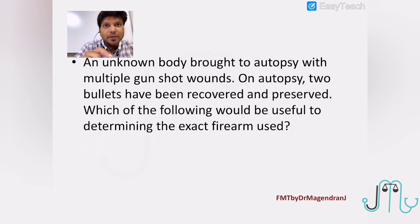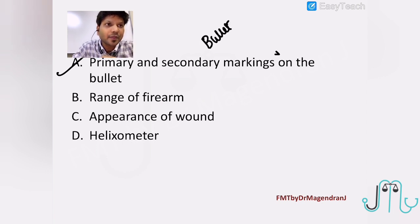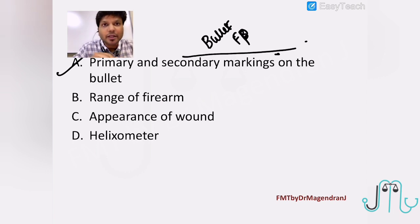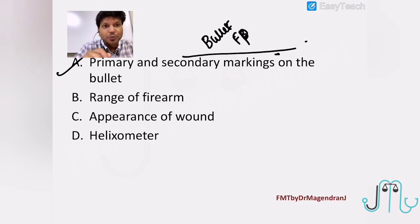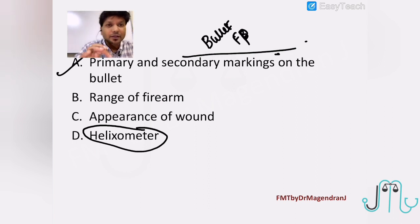An unknown body brought for autopsy with multiple gunshot wounds; at autopsy, two bullets have been recovered and preserved. Which would be most useful to determine which gun was used? Primary and secondary markings on the bullet — this is called bullet fingerprinting. Primary markings are due to the rifling pattern; secondary markings are due to irregularities. We compare the markings on the test bullet and the crime bullet to identify which gun was used. Appearance of the wound helps find the range, not primarily the identification of the gun. The helixometer is an instrument used to examine the inner surface of the barrel.